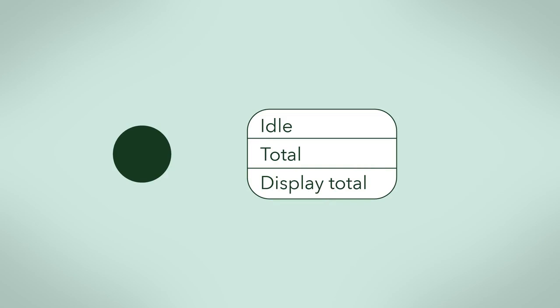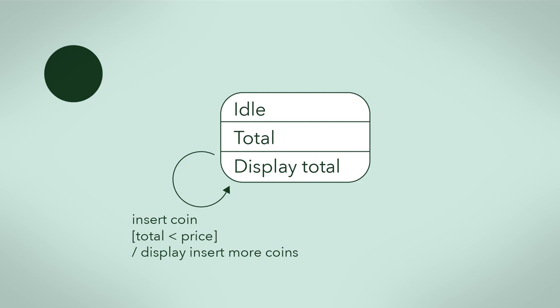Again, back to our vending machine. Suppose when in the idle state, someone inserts a coin and the total so far is less than the product price. Let's express this situation with the transition arrow that loops back to the idle state, with the event insert coin, condition total less than price, and action display insert more coins.